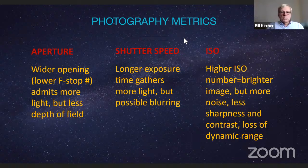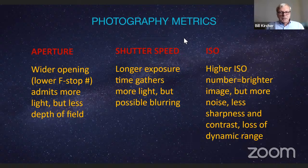ISO is a term that goes back to film days. Very sensitive film was good in low light but at a cost — you were more susceptible to noise and light pollution, and image quality could be degraded. Basically, the higher the ISO, the stronger your signal and the more you can do with limited light. The trick is to balance all three — aperture, shutter speed, and ISO. If you can't adjust the aperture and you're stuck on a shutter speed, the ISO could be your last best friend, but remember it comes at a cost too.